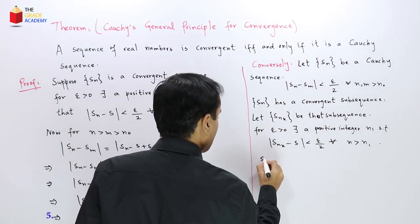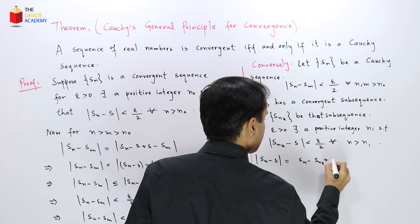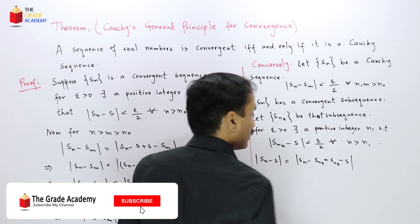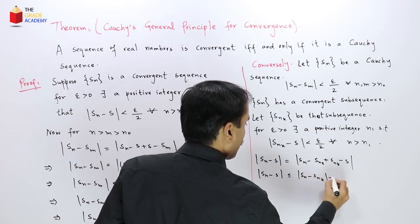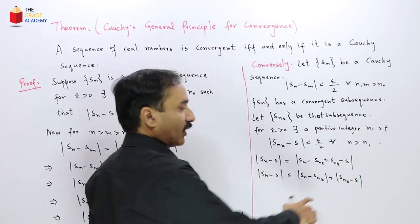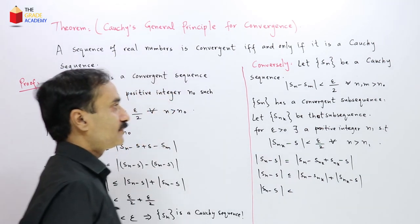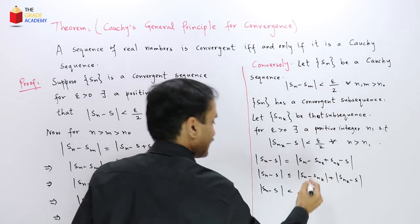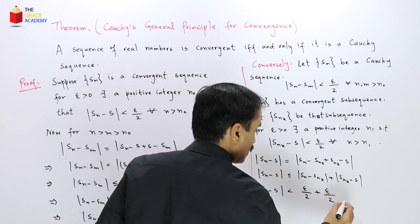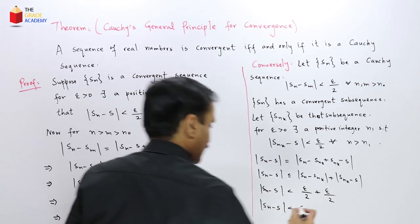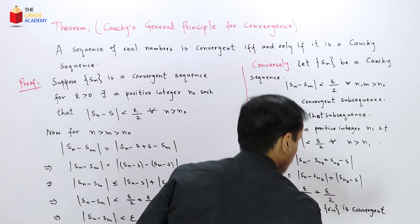Now |Sn - S| can be written as |Sn - Sn_k + Sn_k - S|. By the triangle inequality, |Sn - S| ≤ |Sn - Sn_k| + |Sn_k - S|. Since |Sn - Sn_k| < ε/2 (from the Cauchy condition) and |Sn_k - S| < ε/2, we get |Sn - S| < ε. This implies Sn is convergent and converges to S.